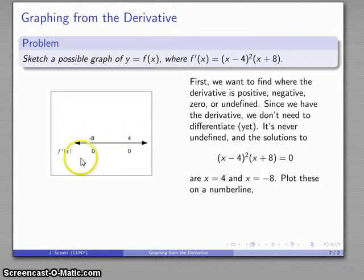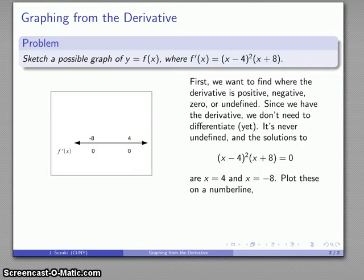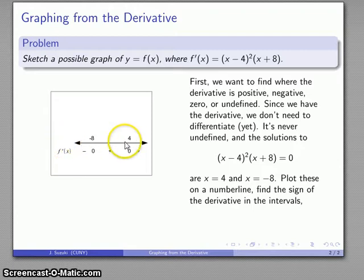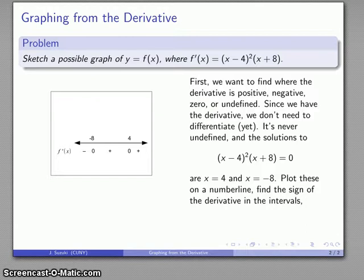I'll plot x equals negative 8 and x equals 4 on a number line. These two points divide the number line into three intervals. I'll determine the sign of the derivative in each interval using test points. For x greater than 4, the derivative is positive. In the middle interval at x equals 0, the derivative is positive. For x less than negative 8, using a very large negative value, the derivative is negative. So the derivative is negative, then positive, then positive — never undefined.